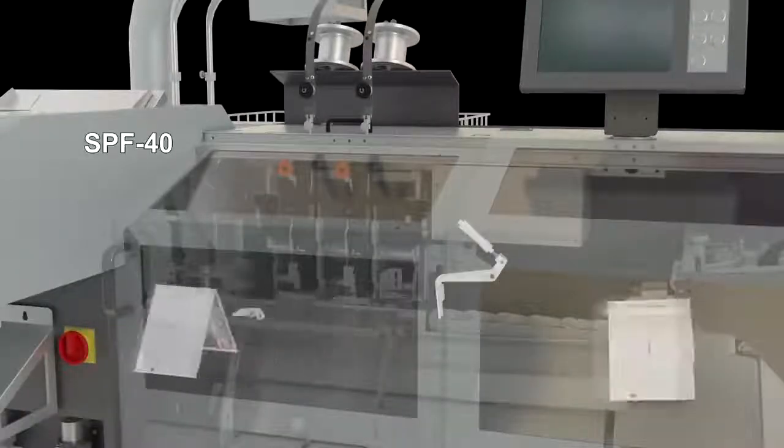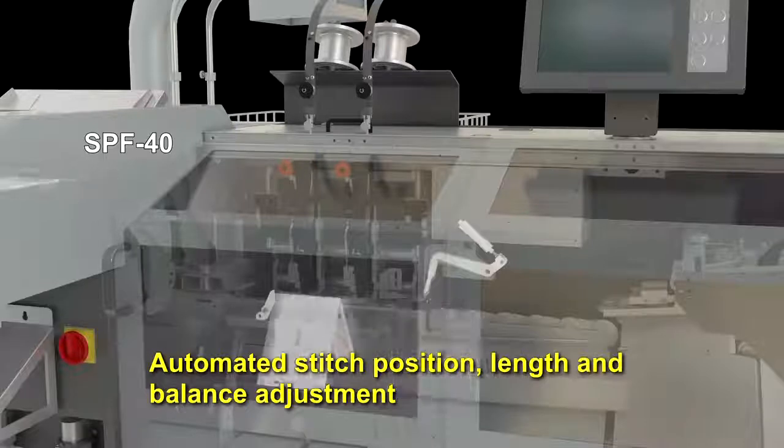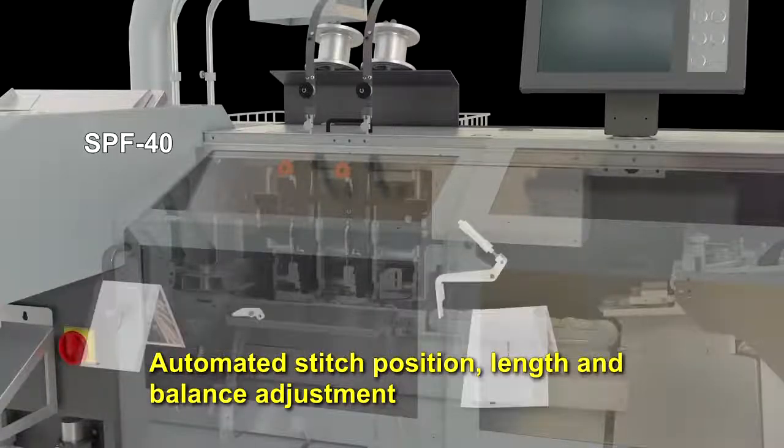Now the set is precisely aligned on the saddle for crossover registration and stitched at the SPF-40 saddle stitch section, which can stitch booklets with as many as 200 pages.